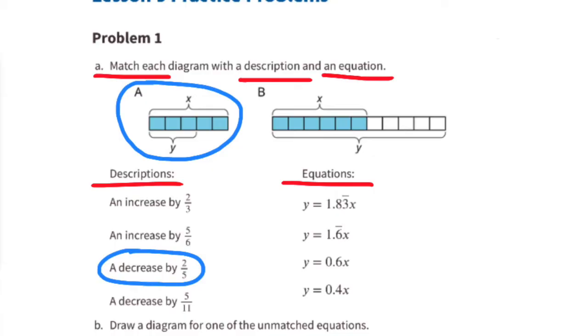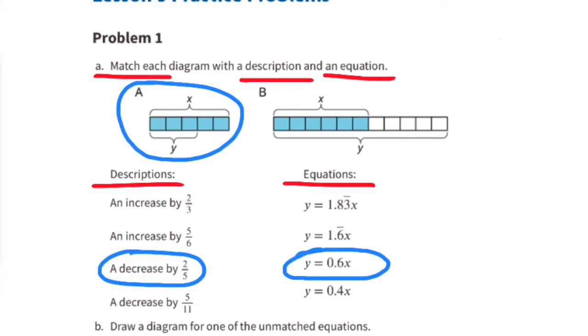And y equals 0.6x, that's because the length of x is five-fifths or one whole, which can also be ten-tenths. Y is three-fifths, which is equivalent to six-tenths, so the length of y is six-tenths the length of x.